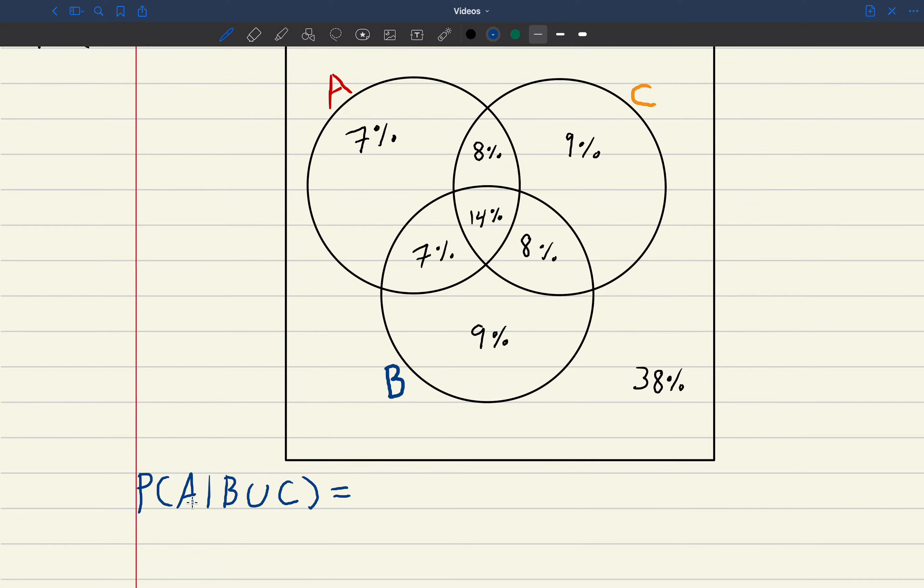So our example is what is the probability of set A given B union C? So what is A given B or C?